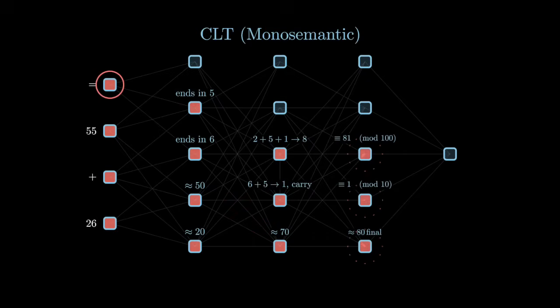Finally, when the equal sign arrives in the last layer, the model activates three high-level constraints. One signals that the final answer should be approximately 80. Another makes sure the answer ends in 1, and the last one confirms the result is exactly 81.